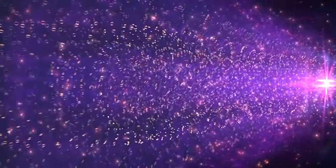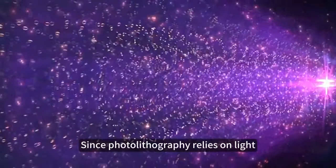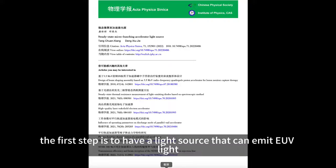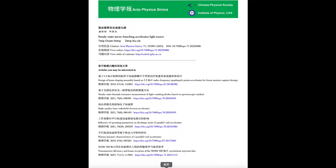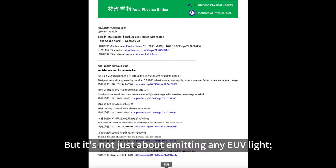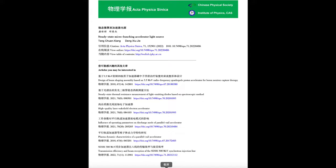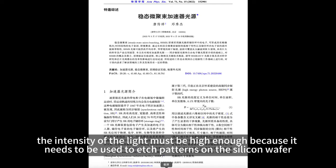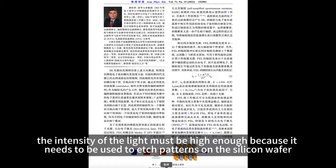Since photolithography relies on light, the first step is to have a light source that can emit EUV light. But it's not just about emitting any EUV light, the quality of this EUV light is crucial. Firstly, the intensity of the light must be high enough because it needs to be used to etch patterns on the silicon wafer.